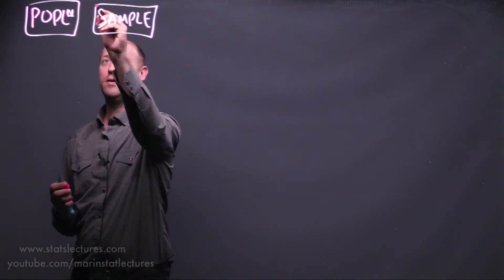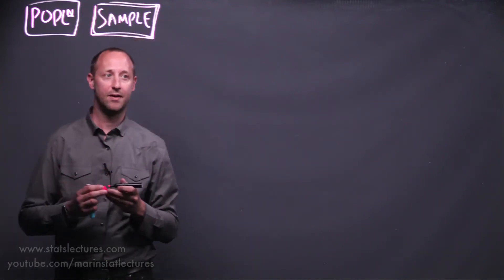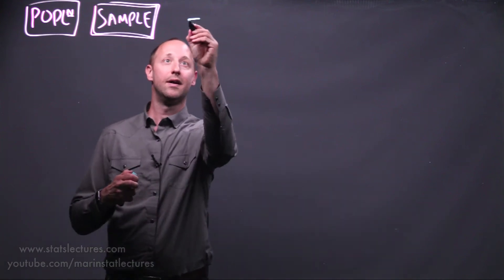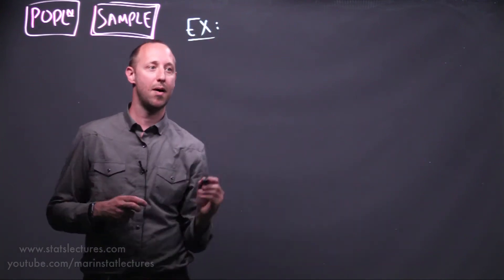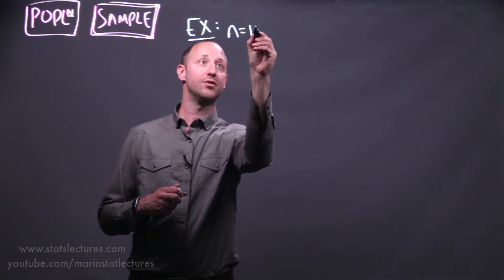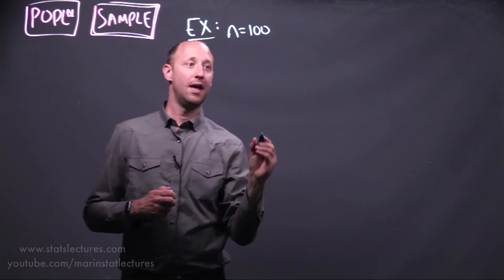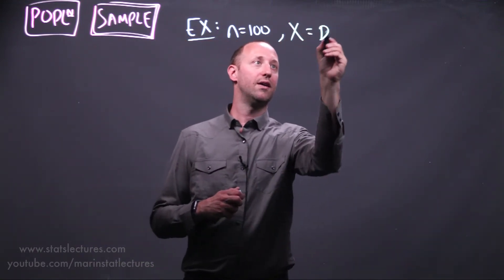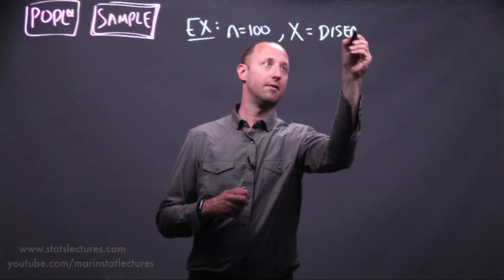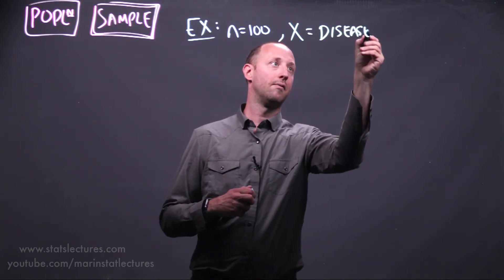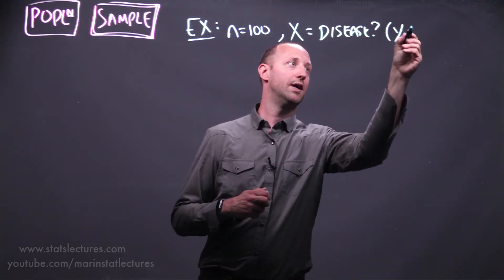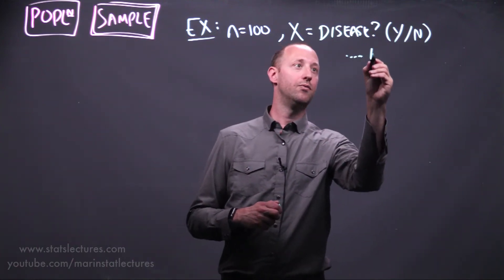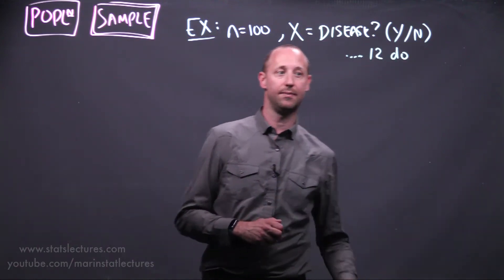First let's talk a little bit about a sample. We can think of the example of taking a sample from a population, say of size 100, and we're going to calculate some variable x recording if they have a particular disease or not, and record it as yes or no. Suppose in our sample, we find that 12 do have the disease.